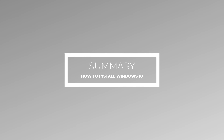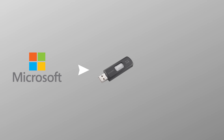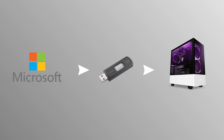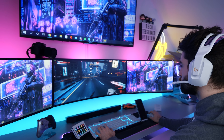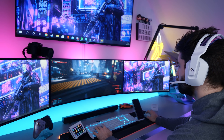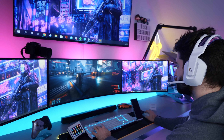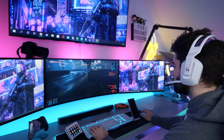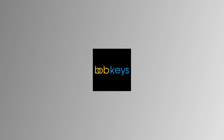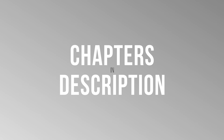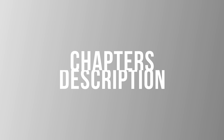Quick summary before we start, just so you know what we're doing. We're using a program from Microsoft to put Windows onto a USB flash drive, which will then plug into our new PC. We can then boot from that flash drive and install Windows on our new machine. From there, you can either use Windows completely free if you can live with the watermark, or you can activate it for $13 from today's video sponsor, BOB Keys. If you want to skip to any parts of this video, I've added chapters. Let's do this.